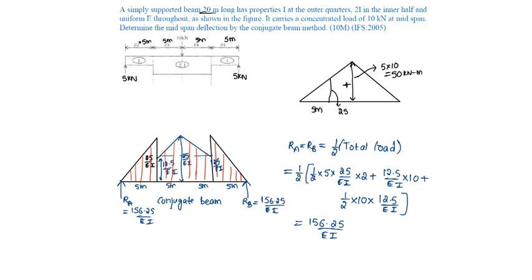Midspan deflection is asked. Midspan deflection means deflection at C. Deflection at C is equal to bending moment at C of curvature diagram or of conjugate beam.